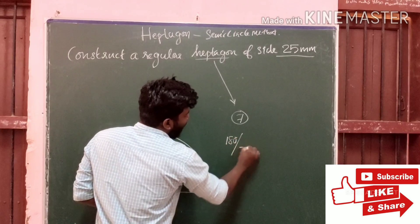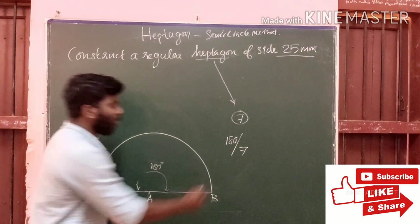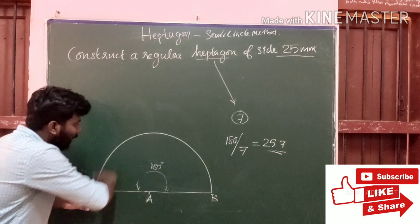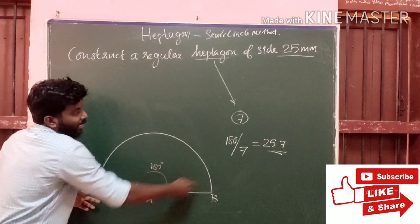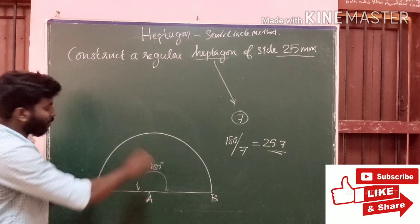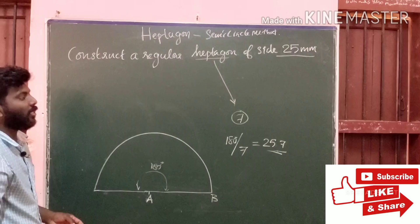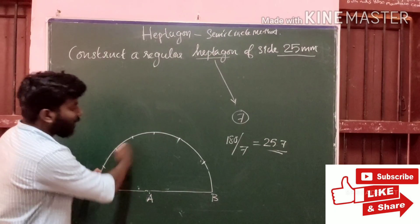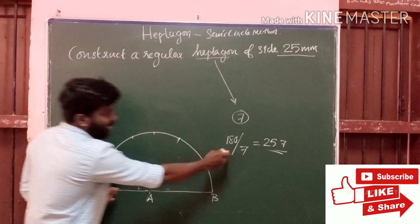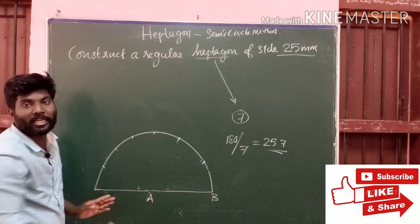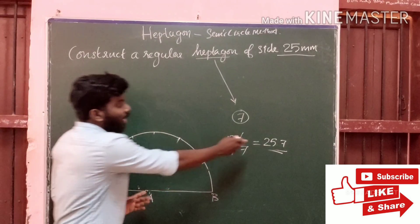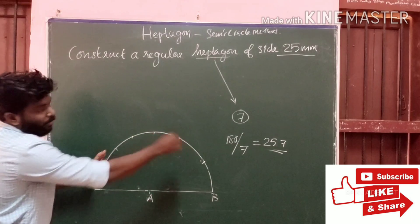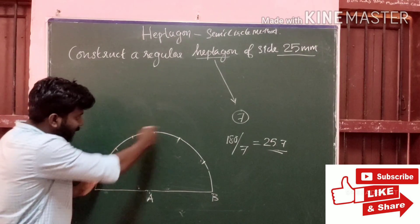We have to divide. We have to divide. One side is 25.7. We have 180 degrees here. 180 degrees is divided because we have 7 sides, then we have 25.7. We divide this 180 degrees and we divide this 8 sector side.